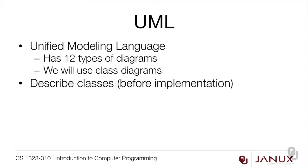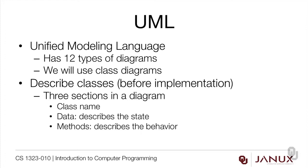It takes a lot of discipline to design things before you implement them, but it's a very important discipline to develop because that's what a professional software engineer will need. There are three sections in a class diagram: the top section is the class name, the middle section is the data that describes the state of the objects, and the bottom section describes the methods — the behavior of the objects. UML allows a lot of flexibility, so it's legal to have a class diagram that only has the class name, or just the class name and data.